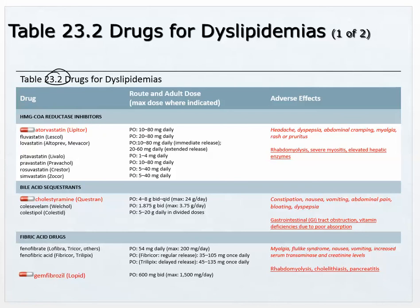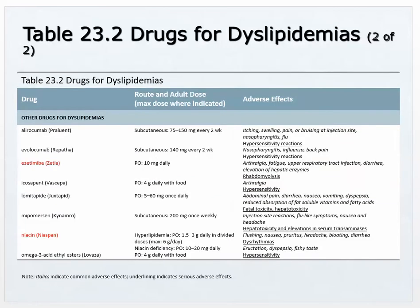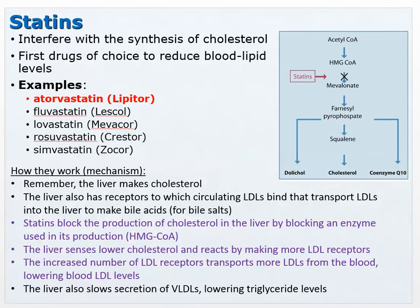Table 23-2 lists the HMG-CoA reductase inhibitors, bile acid sequestrants like cholestyramine, fibric acid drugs like gemfibrozil, and the others including ezetimibe and niacin. Adverse effects are listed in the table — you need to know those. Dosing is generally not required to memorize.